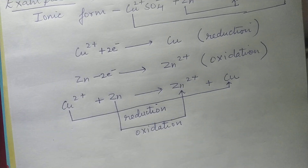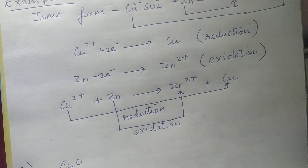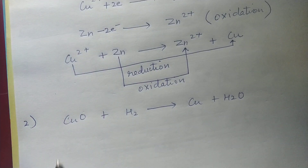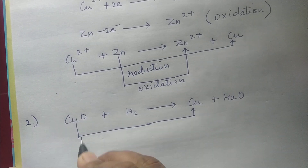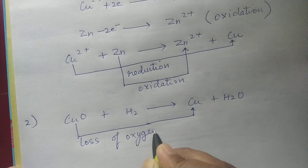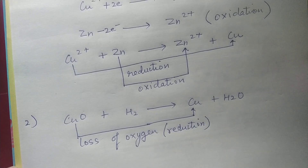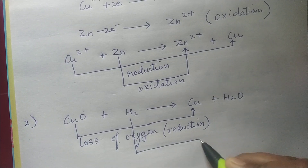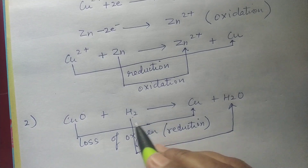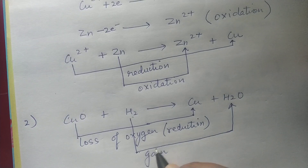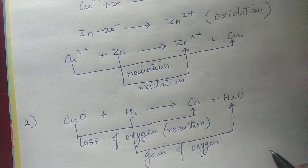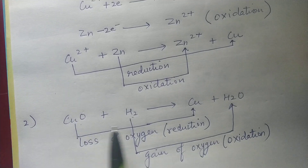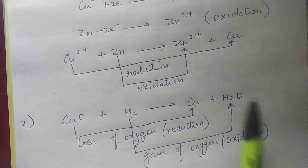Now let's take another example. Suppose we have copper oxide reacting with hydrogen to form copper and water. Here, copper oxide loses oxygen and gets converted to copper. The loss of oxygen is reduction. Hydrogen is gaining oxygen and getting converted to water. Gain of oxygen by hydrogen means hydrogen is oxidized to water — gain of oxygen is oxidation. So in this reaction, copper oxide is reduced to copper and hydrogen is oxidized to water. Oxidation and reduction go side by side, so it is a redox reaction.